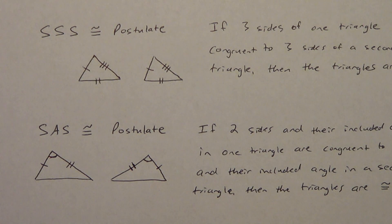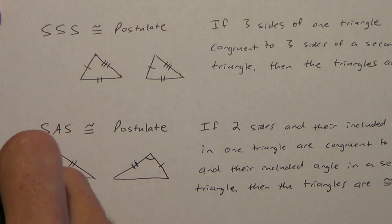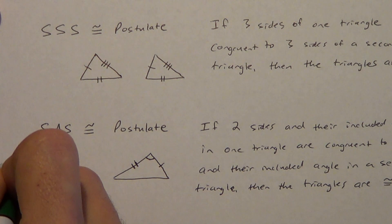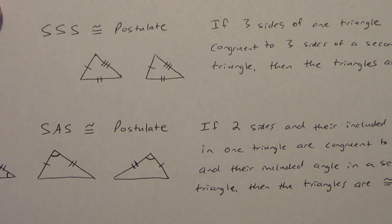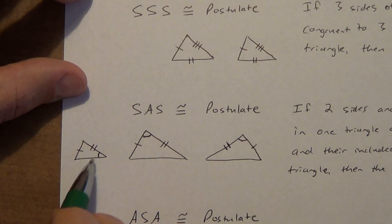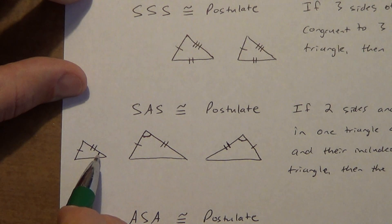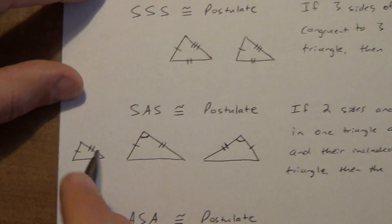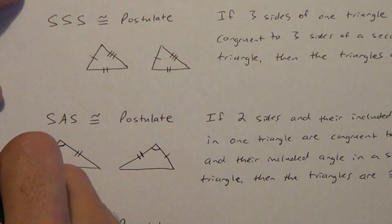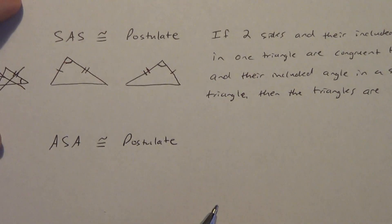Let me show you what side-angle-side does not look like. If the angle is out here on the side instead of between the two sides, that is not side-angle-side — we would call that side-side-angle. We'll talk about side-side-angle later, but this is not SAS.